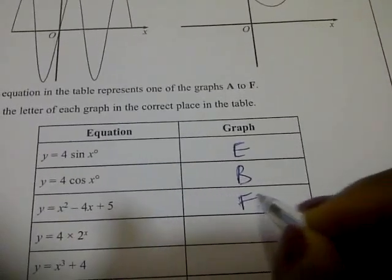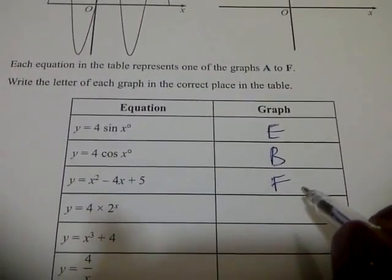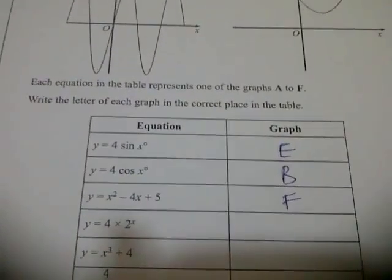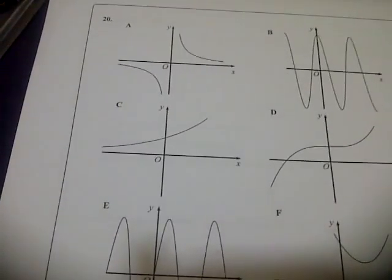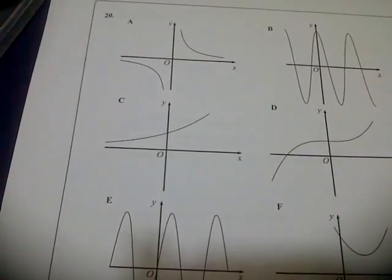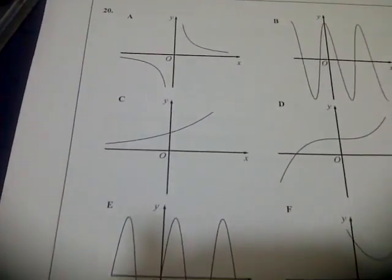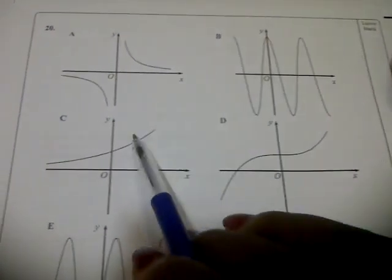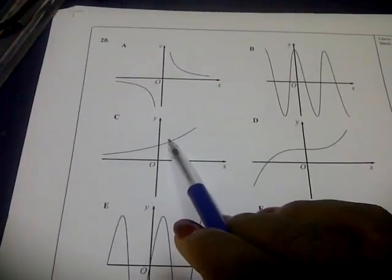So the next one, y equals 4 times 2 to the power x. 4 times 2 to the power x, there is one that is exponential. And the exponential one, this is the exponential one, that's C.